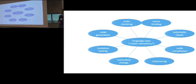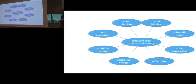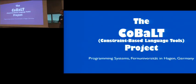This brings me to the big picture. What we're really after is not one specification for two purposes, but one specification for N purposes — code completion, refactoring, code generation, name binding, and other things. This is the umbrella project: the constraint-based language tools project. Thank you.